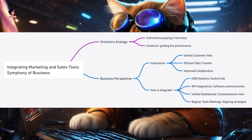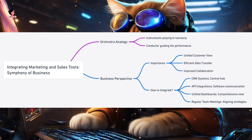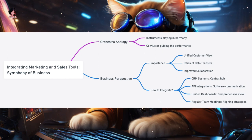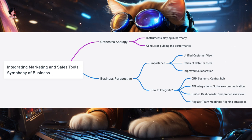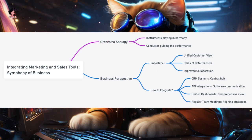Integrating marketing and sales tools — the symphony of business success. Imagine an orchestra where each instrument plays its part, but they all come together to create a harmonious melody. In the business world, marketing and sales are like two key instruments. When they play in sync, the result is a seamless customer journey and increased business success. Why integrate? Unified customer view — integrating tools gives businesses a complete view of the customer, from first interaction to final sale. Efficient data transfer — no more manually transferring data between teams. Improved collaboration — teams can collaborate better, ensuring potential customers don't fall through the cracks.